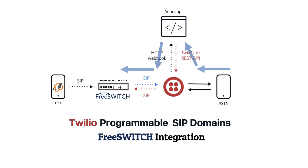TWIML is something we'll learn how to use. From there, Twilio will route the call via SIP to our FreeSwitch system. Since our FreeSwitch setup doesn't have a public IP address, we need to enable SIP registration in the Twilio SIP domain to make this integration work.